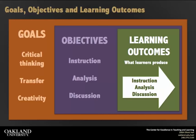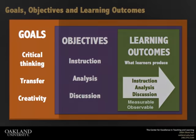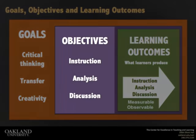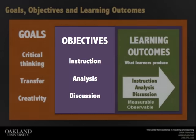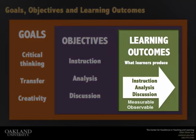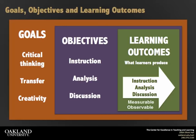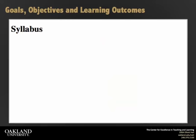Therefore, learning outcomes must be measurable and observable. In short, goals dictate the general aims of a course, project, or activity. Objectives lay out the plan for how these goals will be met, or what the instructor will provide. And the learning outcomes exhibit what the learners actually do as a result of the activity. Objectives are what is intended, while learning outcomes are what is actually achieved.